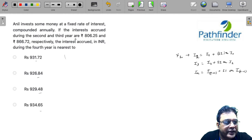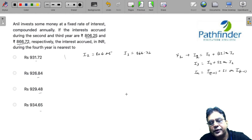If the interest accrued during the 2nd and 3rd year are 806.25 and 866.72, you are given I2 and I3. I2 is 806.25 and interest earned in the 3rd year is 866.72. This is given to you.